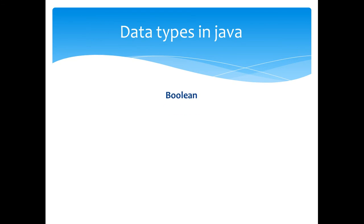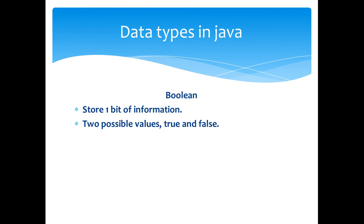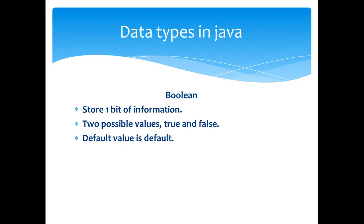The next is the boolean type. It is used to store 1 bit of information at a time. There are two possible values for the boolean type, which are true and false. The default value of boolean is false. Example: boolean flag is equal to true.